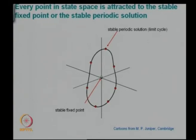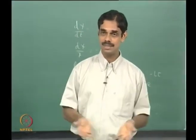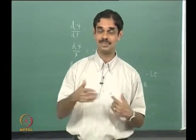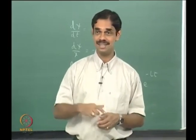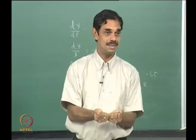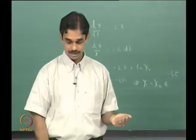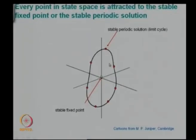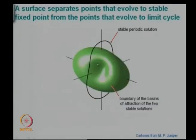This is from Matthew Juniper from Cambridge University. Every point in the state space is either attracted to the stable fixed point or the stable periodic solution which is the limit cycle. Although we say instability, the limit cycle is actually a stable solution — it is just that the oscillations are something we do not like. Some points go down to the fixed point, some points go up to the limit cycle.